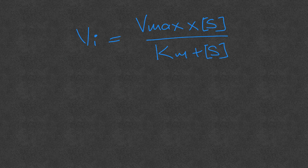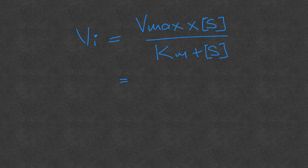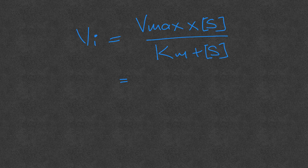So let's take some numbers to calculate initial velocity, and then I'll explain the purpose of this video. I want to explain how to calculate Km when initial velocity is provided, Vmax is provided, and substrate concentration is also provided. First let me show how initial velocity is calculated, and then we'll use the same numbers, remove the Km value, and calculate it to verify.